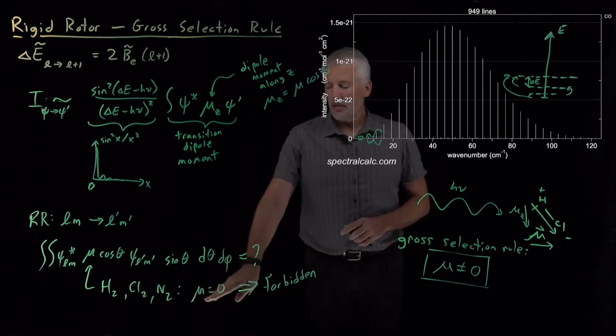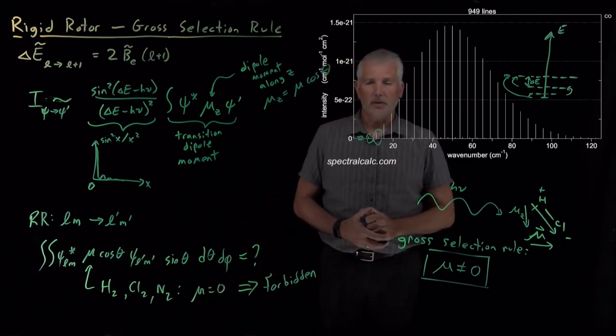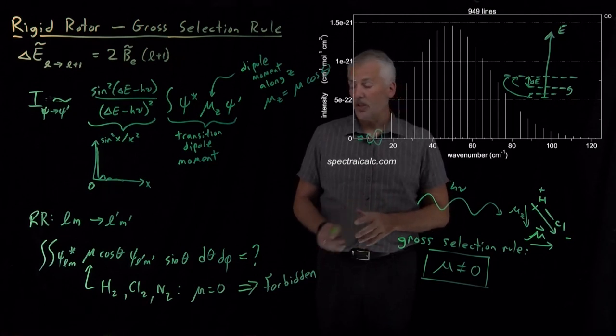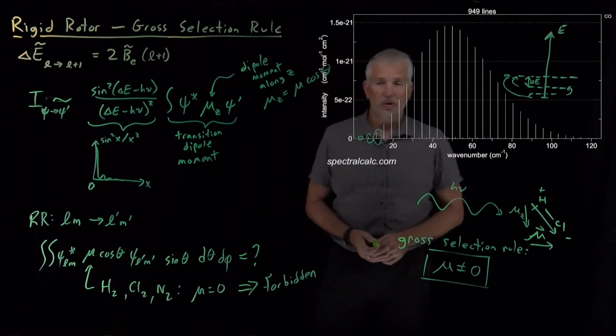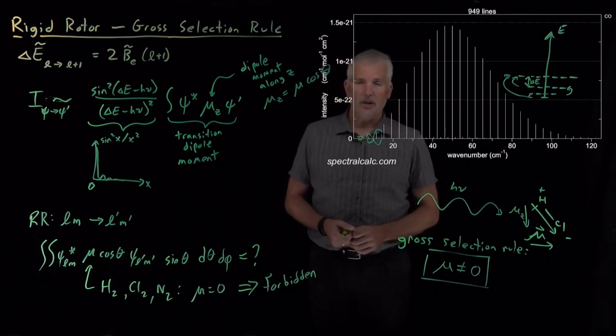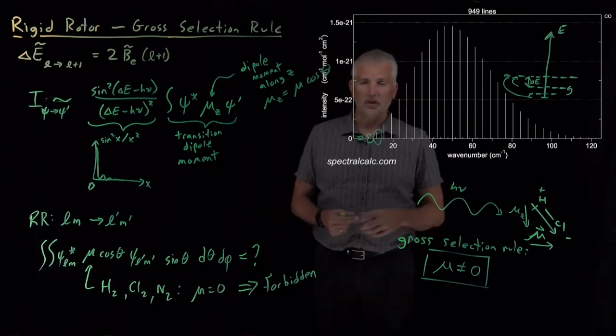We can't cause rotation of a nonpolar molecule using electromagnetic radiation. That doesn't mean we can't cause these molecules to rotate, hydrogen, nitrogen, chlorine molecules do rotate, but the rotation has to be caused by some other source, such as collision with another molecule, rather than by absorbing light.